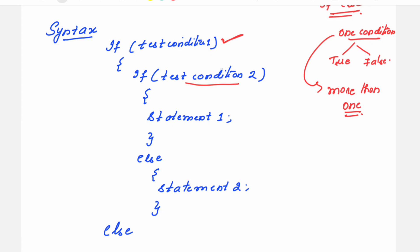If the first condition is true, then check the second condition. The second condition has two possibilities: it can be true or false. If it is true, then that statement is executed. If condition 2 is false, then the else part of that inner statement is executed. We can treat this as the inner if-else. Every if has an else part, so you need to be careful about which else belongs to which if.